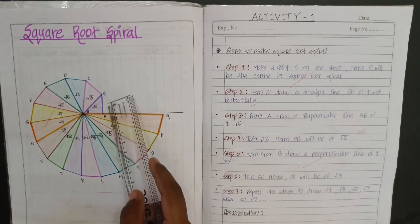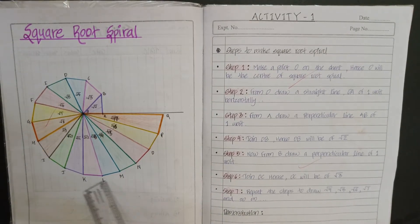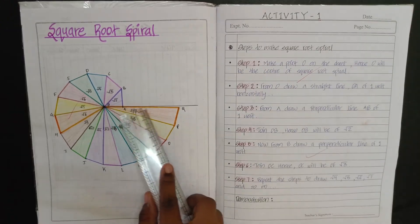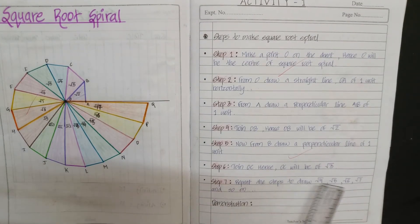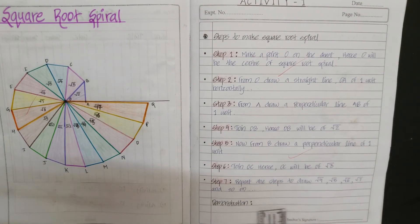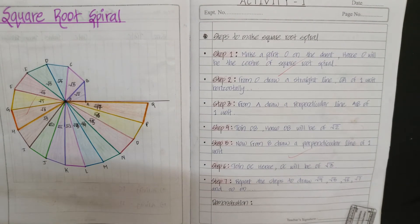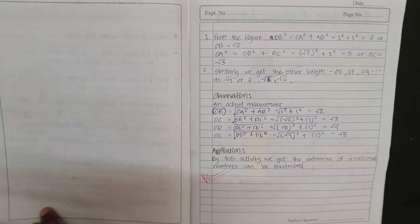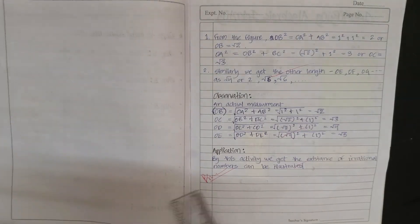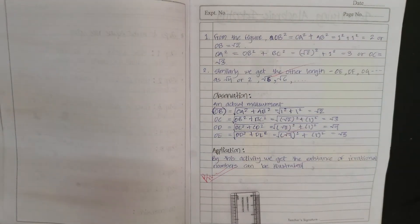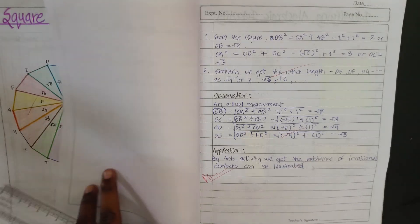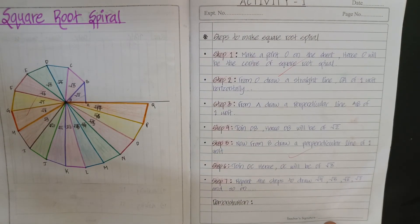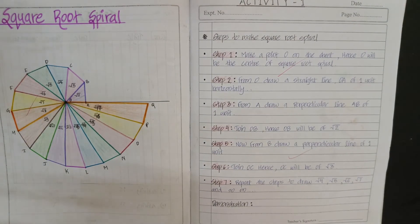Repeat the steps to make the square root spiral. This final length represents root 70. From the above steps we have completed the activity. The application of this activity is that it can illustrate the existence of irrational numbers. Thank you.